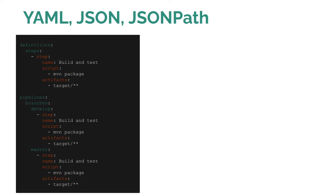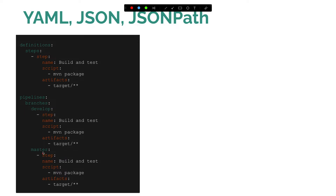Let me show you an example. We have a sample YAML for a pipeline job in Jenkins. We have a 'definitions' key with an object 'steps', where we define a step named 'build and test' with a script executing 'maven package' and an artifact published to a target directory. When building a pipeline for two branches — develop and master — we end up using this same syntax in both branches, which is a serious repetition problem.